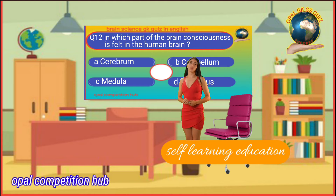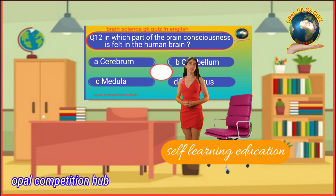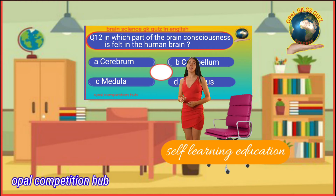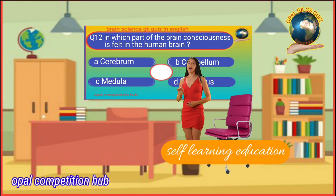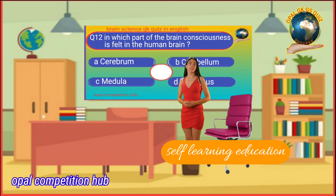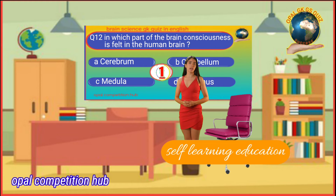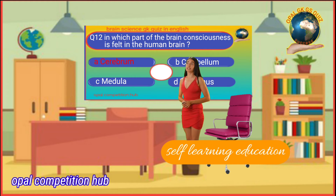Question number 12: In which part of the brain is consciousness felt? Option A: Cerebrum. Option B: Cerebellum. Option C: Medulla. Option D: Thalamus. Your time starts now. Your answer will be Option A: Cerebrum.